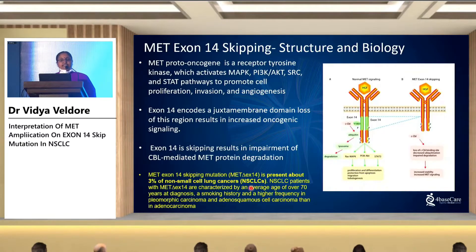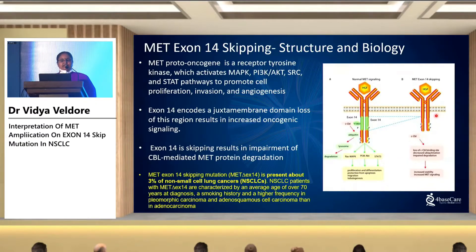Moving to exon 14 skipping: essentially when the MET gene loses this particular region, it becomes short. When it becomes short, it does not get degraded. The life of this MET protein increases, and it also takes advantage of survival by becoming oncogenic. This is one of the fundamental molecular events in non-small cell lung cancer in a small subset of one to five percent, wherein this oncogenic transformation occurs from a normal gene. This leads to activation, proliferation, and subsequently malignancy.